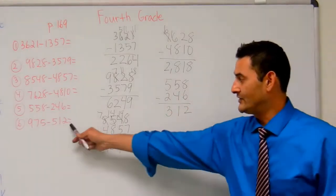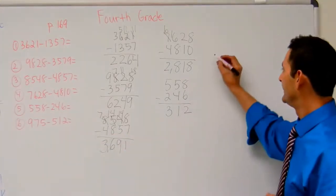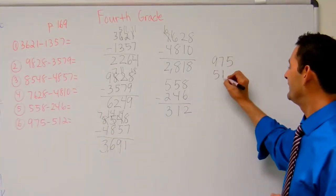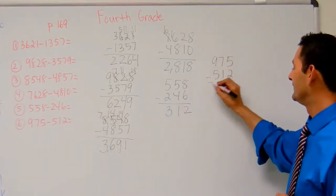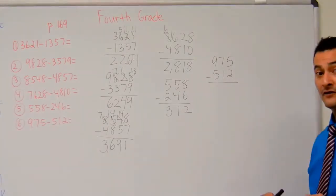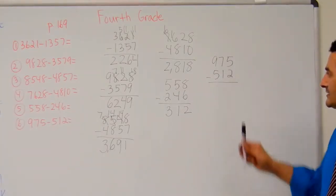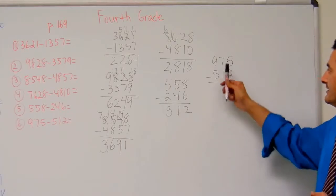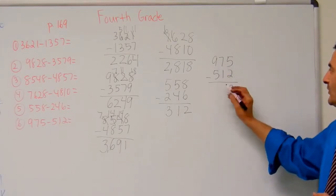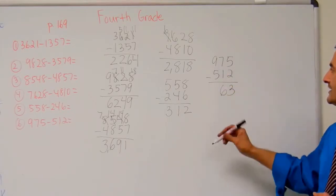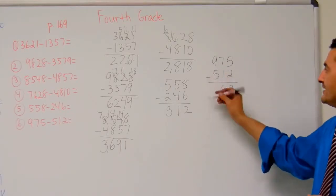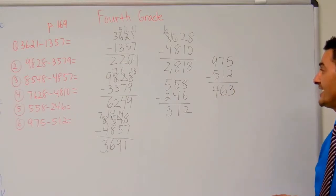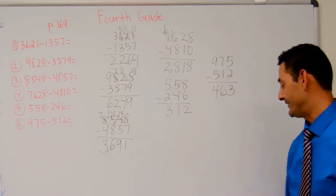And finally, let's do number 6. 975 minus 512. Let's look at the 1's place: 5 minus 2 is 3. 7 minus 1 is 6. And the 100's place: 9 minus 5 is 4. So the answer is going to be 463.